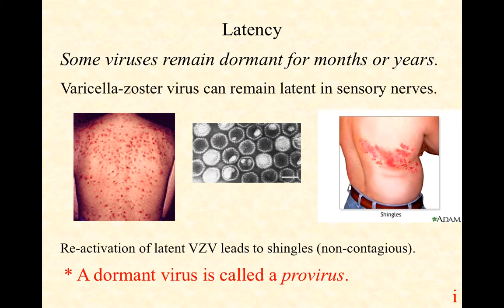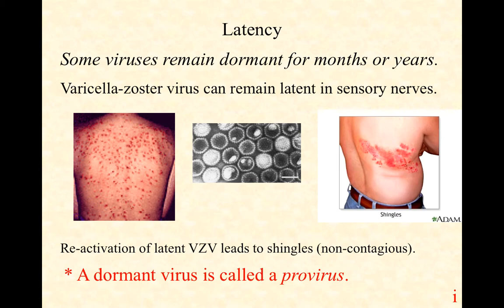Latent varicella zoster virus hiding in sensory nerve bundles almost always affects one side only. When it reactivates, it causes shingles. Shingles has traditionally been considered non-contagious, though there is growing debate — someone with shingles could potentially transmit chickenpox to an unvaccinated person who has not had prior VZV exposure. This dormant, integrated form of the virus is referred to as a provirus.